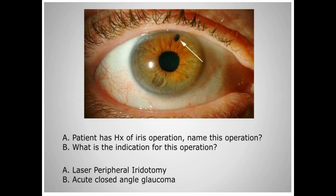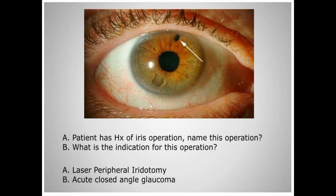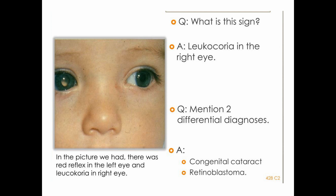Look at this picture — some surgery has been done to this patient. Name the surgery. This surgery is called laser peripheral iridotomy. With the help of a laser we make a small hole in the peripheral part of the iris. We do this to decrease the pressure in acute angle closure glaucoma — that is the indication for this surgery.